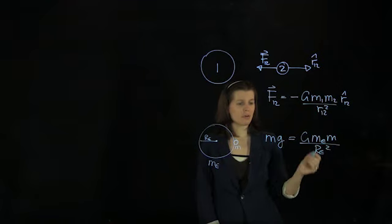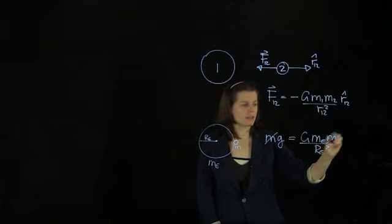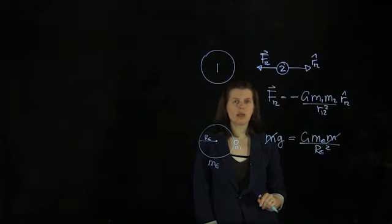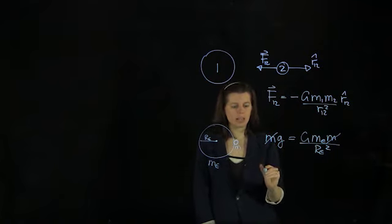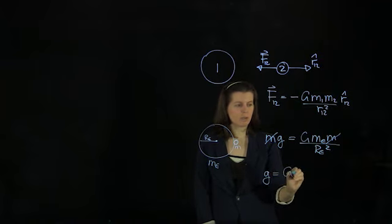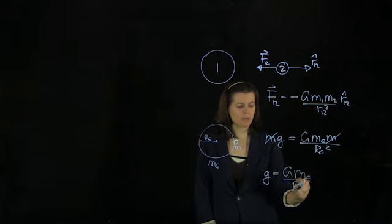And from that, we already see that we can cancel out the small m's of the moon rock, and we get to g here. So we can calculate the gravitational acceleration, which is capital G Earth mass over Earth radius squared.